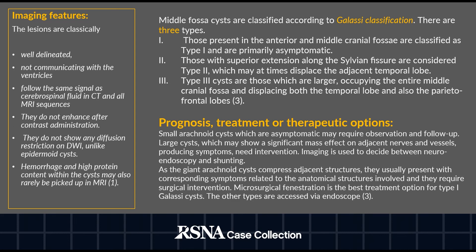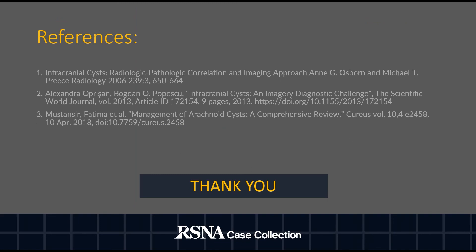Regarding prognosis and treatment: when lesions are small and asymptomatic, they just require observation and follow-up, as in this case. When lesions are large and show significant mass effect on adjacent nerves and neurovascular bundles, intervention is needed. Imaging can help decide whether neuroendoscopy or shunting is required. Giant arachnoid cysts compressing adjacent structures and producing corresponding symptoms require surgical intervention. Microsurgical fenestration is also a better treatment option for Type 1 Galassi cysts. Other types are approached via endoscope.